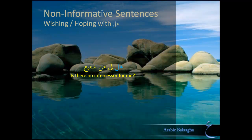The reason he uses Hal as opposed to Layta in the context of Tamanni is because Hal is used for questions. When you have Tamanni for something, you know that thing is impossible — or at least extremely unlikely, like the example of youth returning. But when you ask a question, you don't know which way it'll go; both are possible. So by using a question word in place of a wish, the disbeliever is pretending there's some hope for him, showing his complete desperation. In Arabic, we call this reducing the impossible to the level of the possible, and the purpose is to show complete and utter desperation.